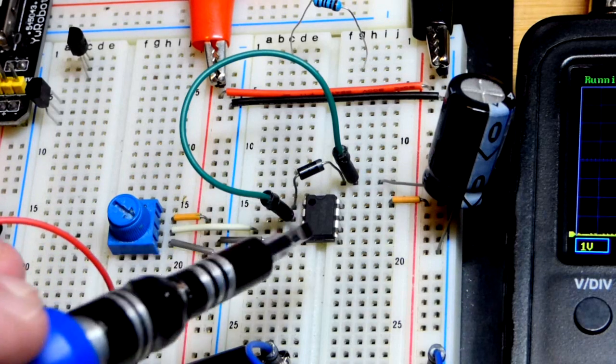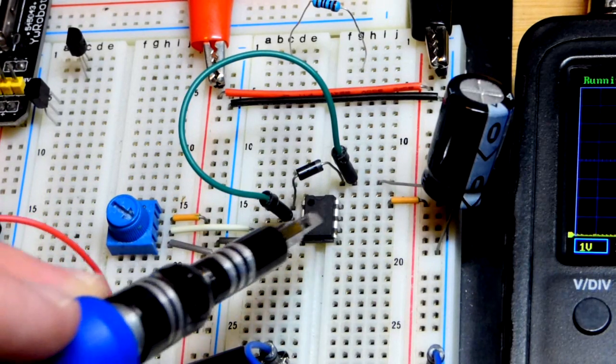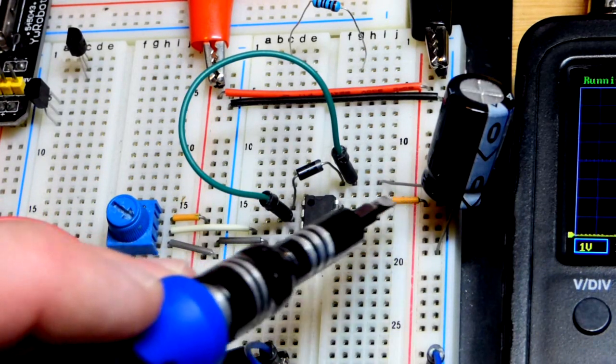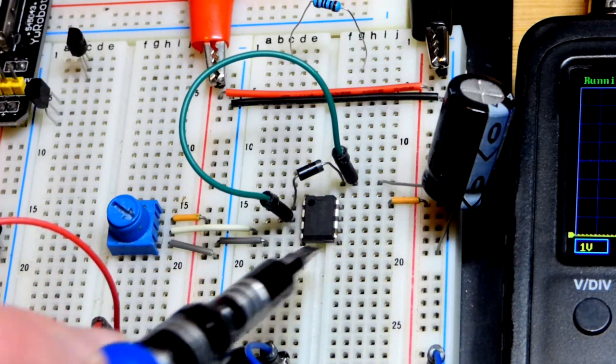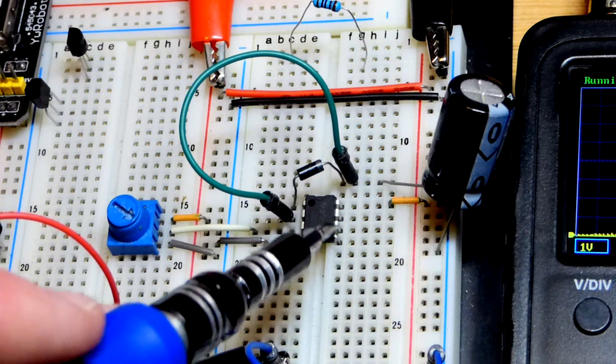And here we have the circuit on the board. So there's an LM358. We have to power the integrated circuit. That's going to the positive side of the power supply. Pin number eight up there and then pin number four to the negative side of the power supply.